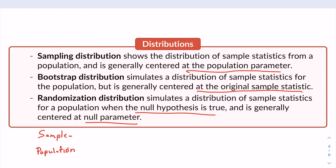A sample is the cases or units that we've actually collected data on, and the population is all the cases or units that we're interested in. The three distributions — sampling, bootstrap, and randomization — all correspond to sample statistics, and you get standard errors from them. A sample and a population are not about sample statistics; they're about cases and units, and you get standard deviations.